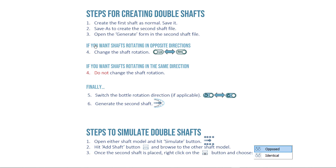Next, open the generate form in the second shaft file and make a choice: are your double shafts going to be rotating in opposite directions towards each other, or rotating in the same direction? If they're in opposite directions, you need to change the shaft rotation on the second shaft file. If they're rotating in the same direction, do not change the shaft rotation — leave it left-hand or right-hand, whatever it was.